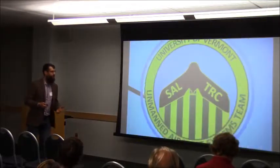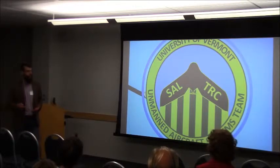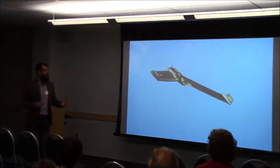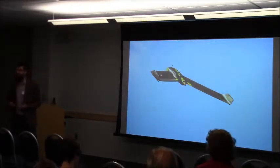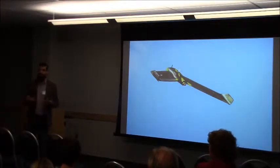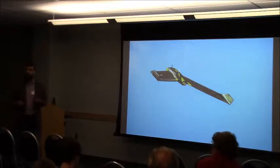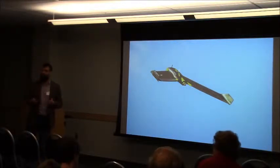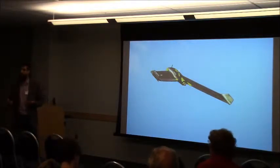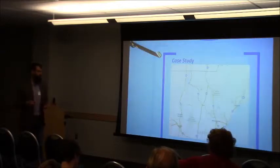At UVM we've formed what we call our unmanned aircraft systems team, our UAS team. We specialize in using these lightweight, very high-tech drones to gather mapping-grade imagery of our landscape — mapping-grade data that we can bring into our geographic information systems and make measurements from. This isn't just attaching a GoPro to a drone; this is orthorectified imagery for 2D and 3D measurements.